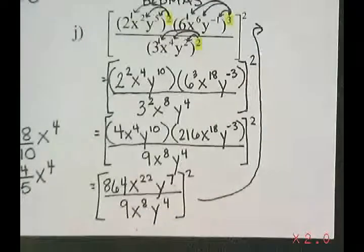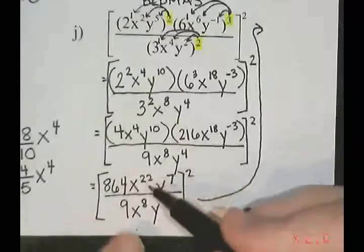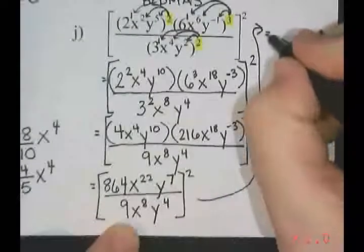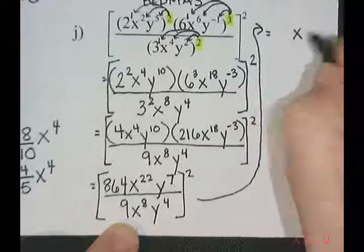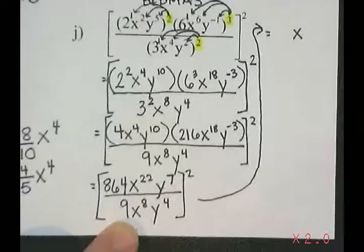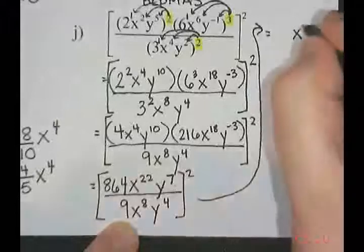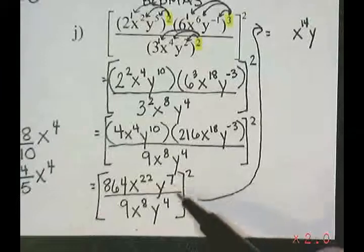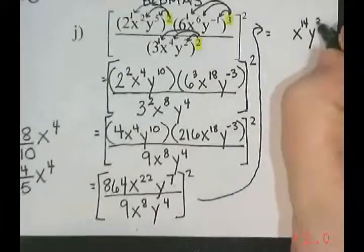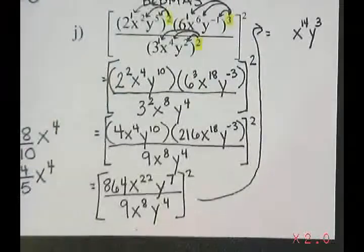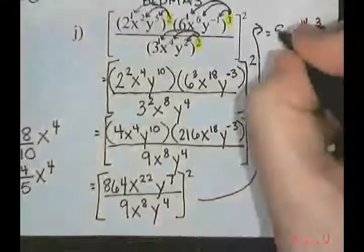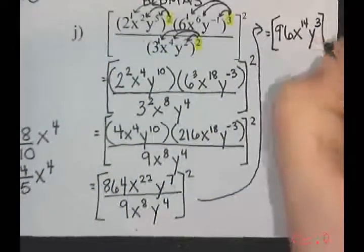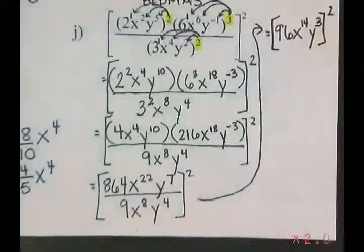So I'm going to do the division next, starting with the variables. x to the 22 divided by x to the 8 — we subtract — 22 take away 8 is 14. And y to the 7 divided by y to the 4 — we subtract — 7 take away 4 is 3. And 864 divided by 9 is 96. That is still all in big brackets to the power of 2.